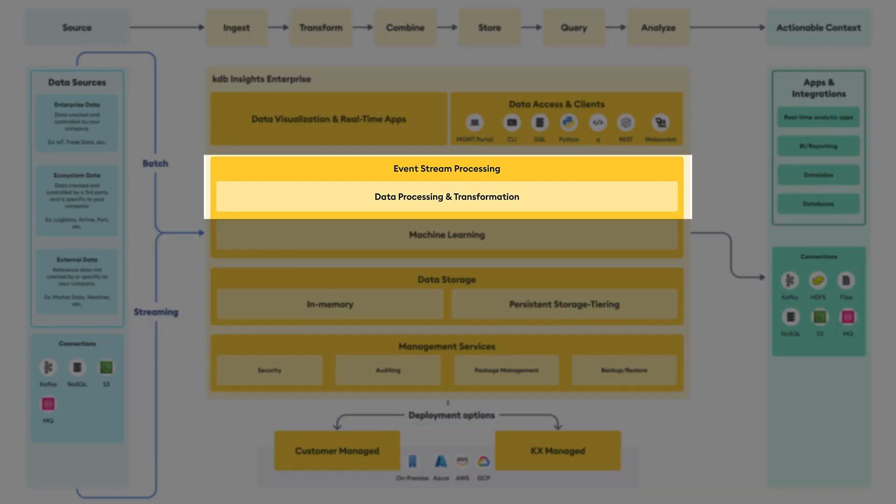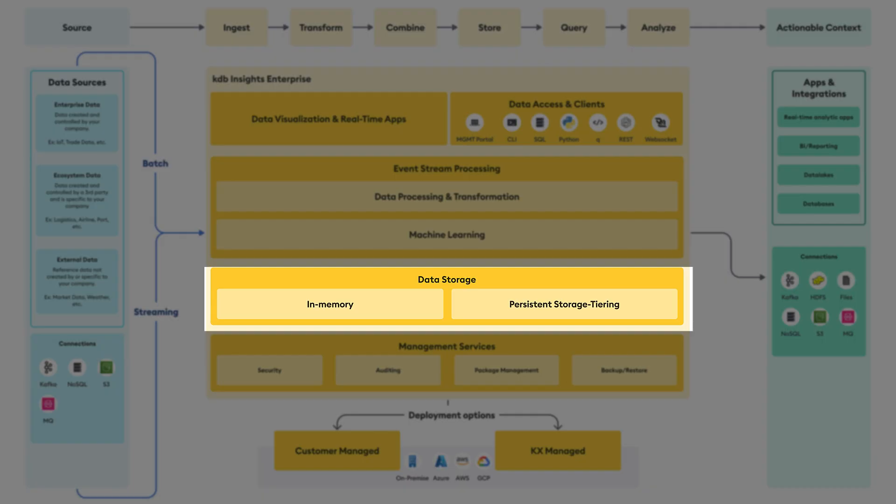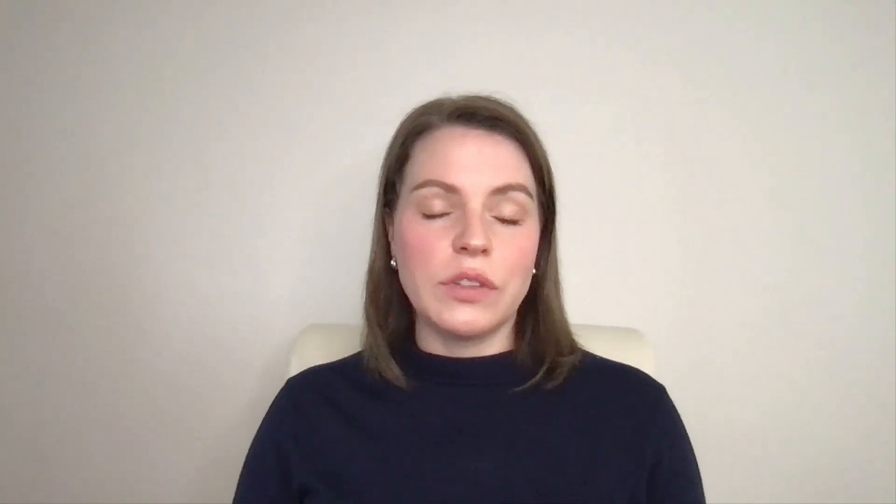Then we have the transformation layer, which processes ingested data in real time. It can apply transformations, aggregations, joins, and other computations to prepare the data for analysis. Then we have data storage — we use a high-performance database to store and manage our data, which ensures quick and efficient access. The product manages where real-time and historical data implicitly get saved, so you don't have to worry about it.